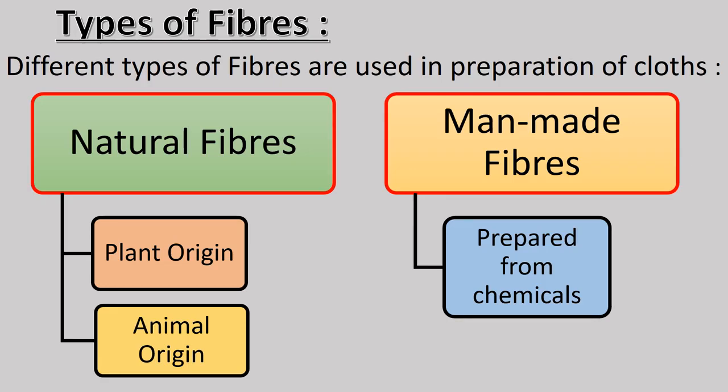From our previous knowledge, we know different types of fibers are used in preparation of our clothes. They are natural fibers or man-made fibers. Natural fibers are again split into two types based upon their origin: one is plant-based origin, second one is animal-based origin, whereas man-made fibers are those which are prepared from chemicals.